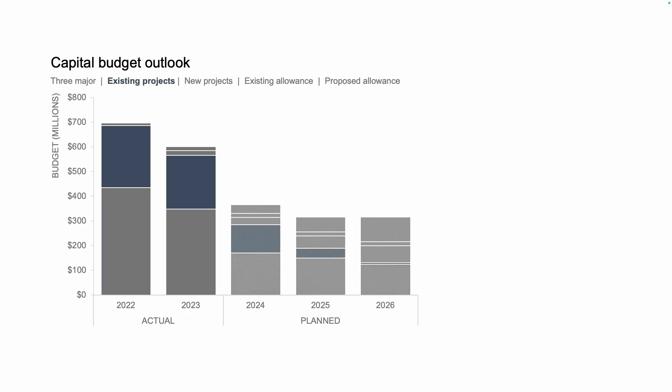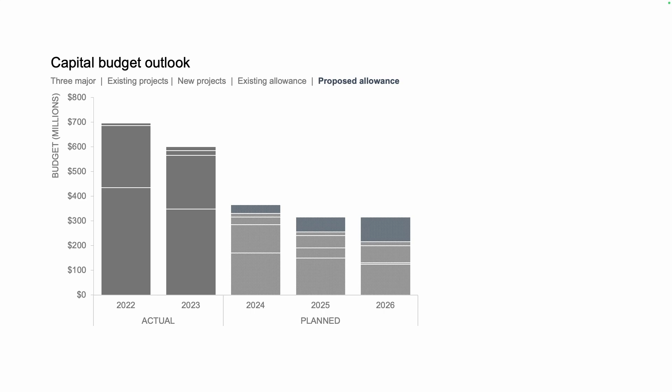We then have existing projects, which will be finished in 2026, with a small amount in the final year. And the budgets for new projects, which understandably increases over time. The existing allowance stack shows the extra budget or the buffer that's been allocated, and we can see from 2023 to 2026 there is a small element of buffer available within these projects. And the final series, proposed allowance, is the projected amount of budget that's going to be required for all of these projects.